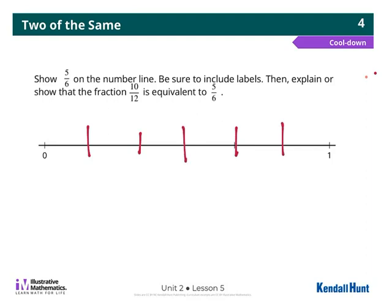So that I have 6 equal parts. So 1, 2, 3, 4, 5, 6. Okay, now I need to show 5/6 and it says include labels. So I'm going to label it.